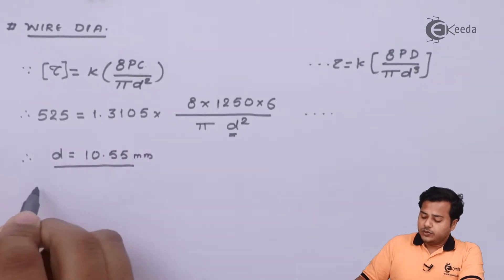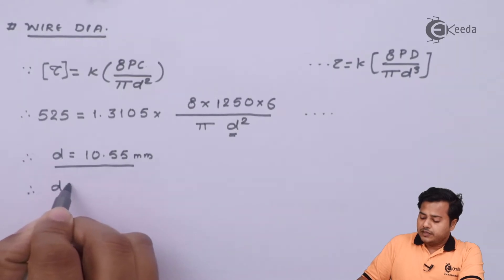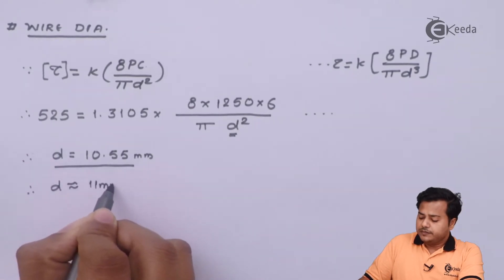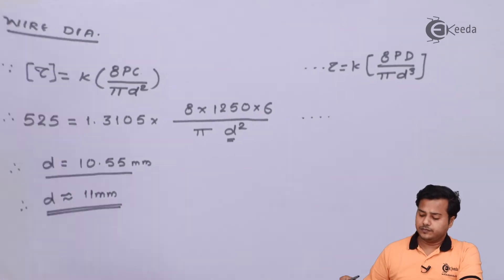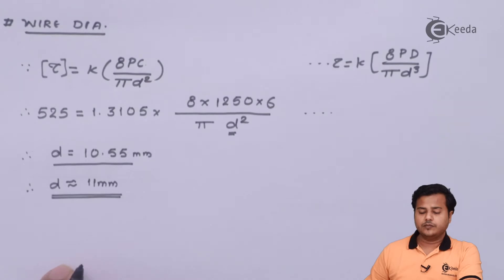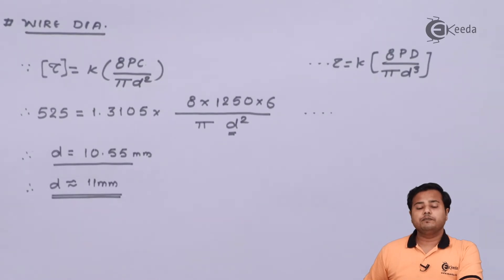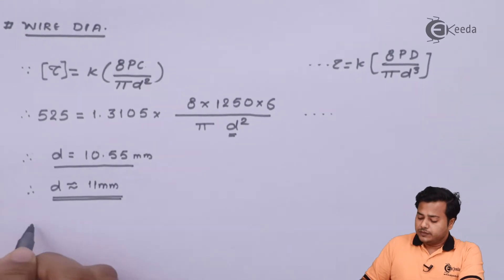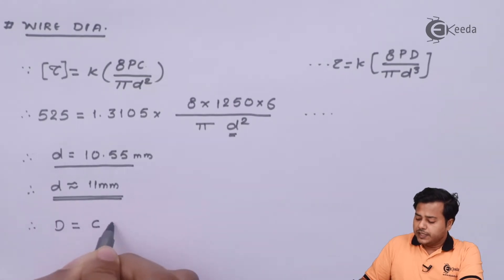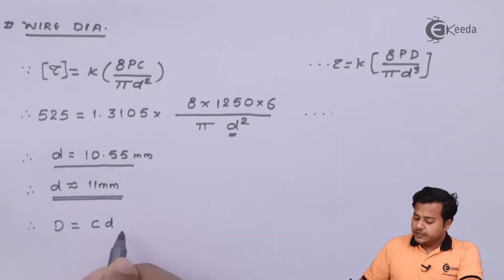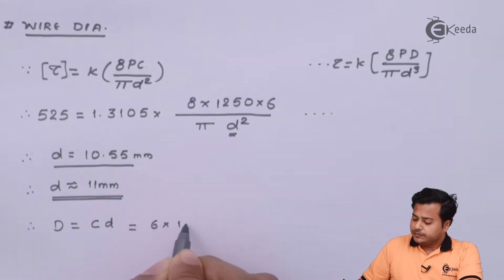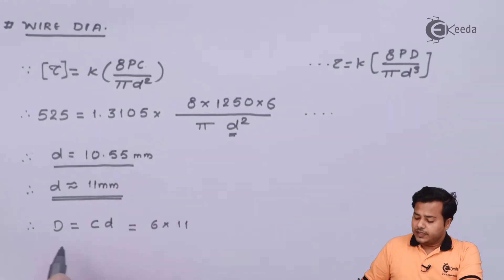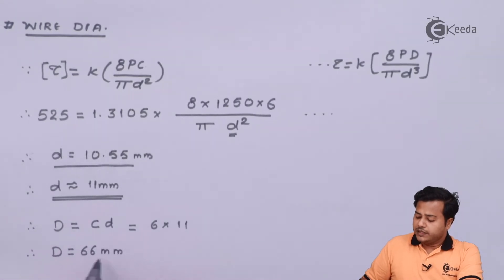We take the wire diameter equal to 11 millimeter. Therefore, the mean diameter can be found out using the formula C times d, which equals 6 times 11, and therefore the mean diameter D comes out to be 66 millimeter.